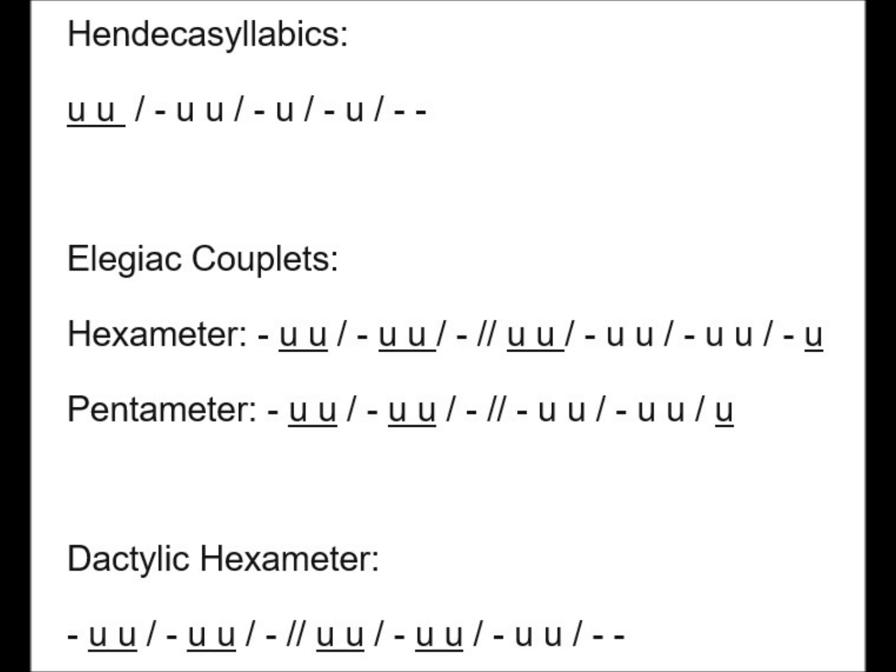Let's talk about meter. Every single poem is going to have a definitive meter. This keeps track of how you say the poem to preserve the author's intentions and make it sound rhythmic. There are three types of poetry we're going to focus on this year: hendecasyllabics, elegiac couplets, and dactylic hexameter.